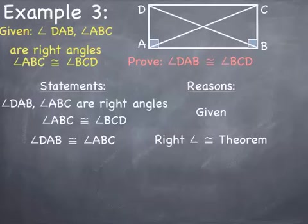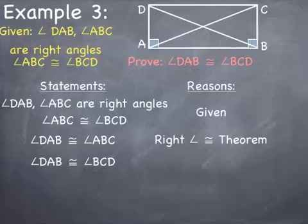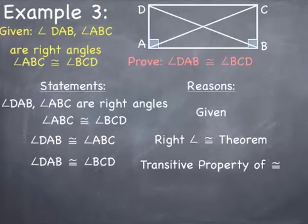Remember, I'm trying to prove that angle DAB is congruent to angle BCD. The last given statement is angle ABC congruent to angle BCD, and I just wrote that angle DAB is congruent to angle ABC. Both angles are set congruent to angle ABC, so using the transitive property of congruence, I can drop out the ABC and say angle DAB is congruent to angle BCD. My last statement is what I was trying to prove, so I am done.